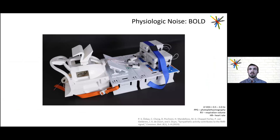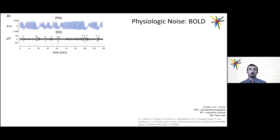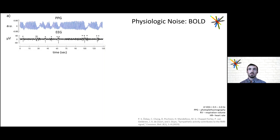We also have things that will affect the BOLD signal itself. One study examined fMRI data during sleep compared to EEG, with concurrent peripheral physiological measurements using photoplethysmography to get heart rate and heart rate variability, as well as a chest strap to measure respiration. The EEG time courses show K-complexes identified by expert eye, and at each of those points we see a decrease in the PPG amplitude. K-complexes are known times when the brain puts out extra sympathetic tone, which acts on the vasculature.